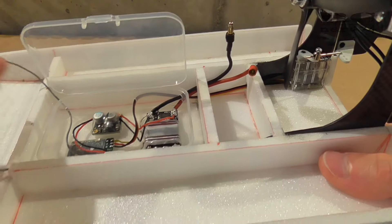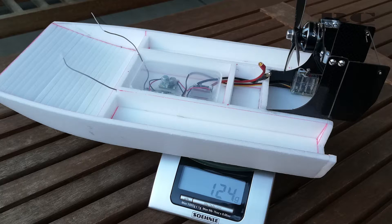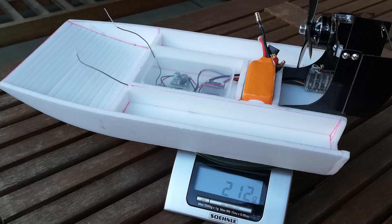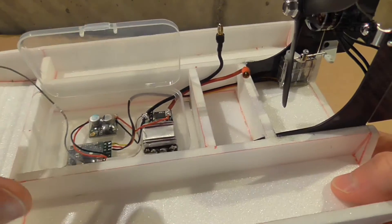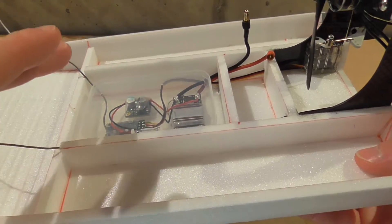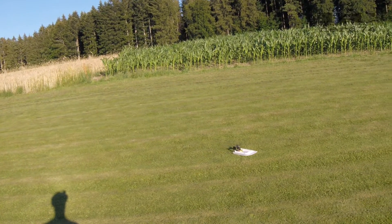The boat weighs only without battery 124 grams and including the battery 212 grams so it's pretty lightweight. The downside of the test I did on grass is that it's absolutely impossible to drive this boat straight.